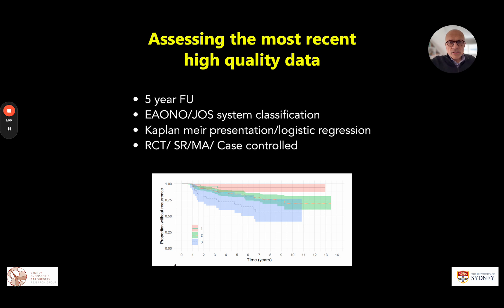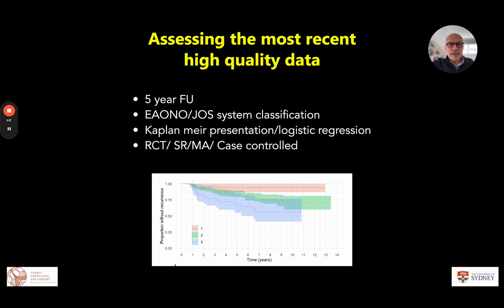To do this I looked at the last 10 years of data. I may have made mistakes, and I apologize to any authors I've left out, but we're looking at high-quality data with at least five-year follow-up for cholesteatoma, presented with Kaplan-Meier curves and logistic regression, and we're looking for high-quality randomized trials, case-controlled studies, and systematic reviews with meta-analysis.